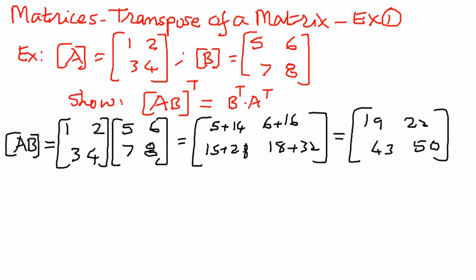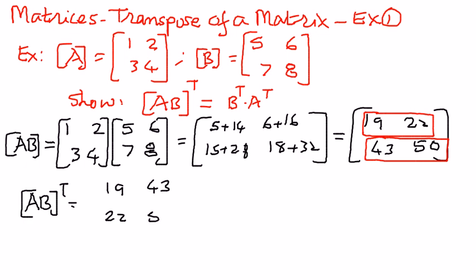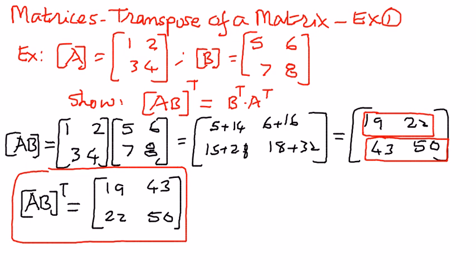So the product of AB is 19, 22, 43, and 50. But if we were to transpose this, how do we transpose this? We're going to write the rows as columns. And therefore, we can write this as 19, 43, 22, and 50. The product of AB and then transpose of that is this matrix here. I'm going to put a red box on that.